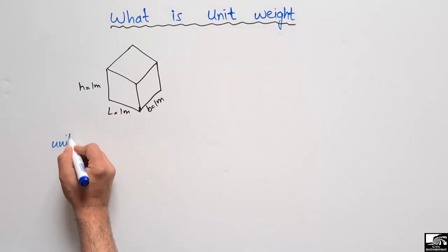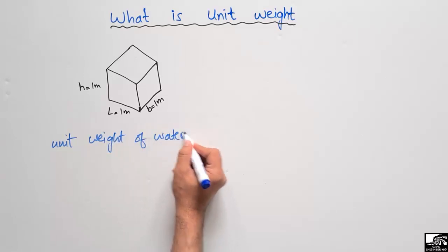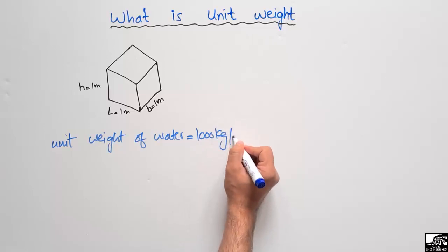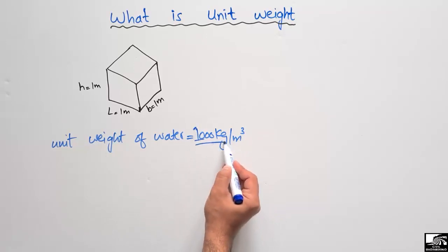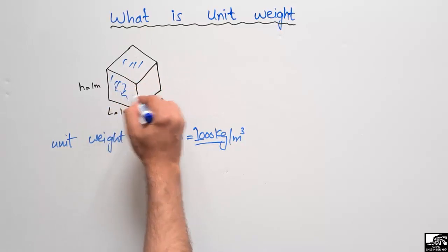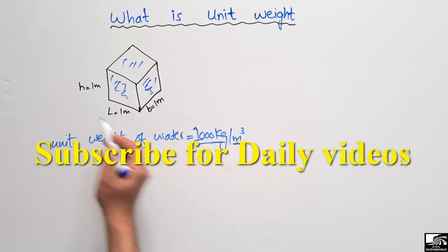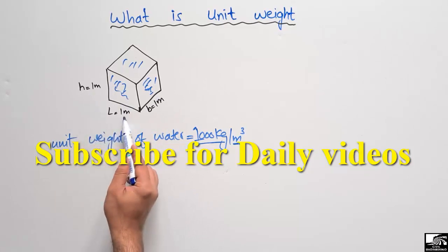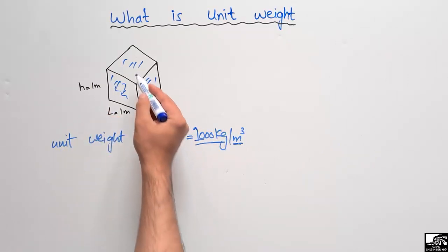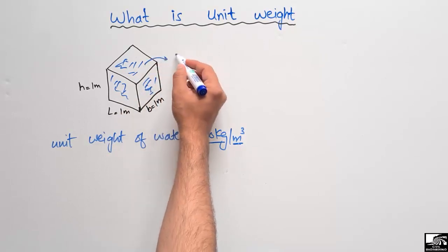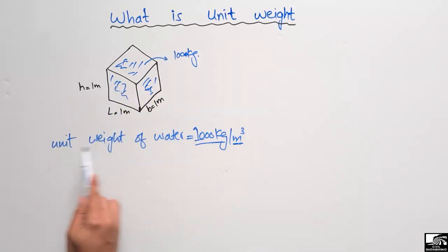We know that the unit weight of water is equal to 1000 kilogram per cubic meter. This means that 1000 kilograms of water is present in one cubic meter of volume — that is, a cube with a height of 1 meter, length of 1 meter, and width of 1 meter.